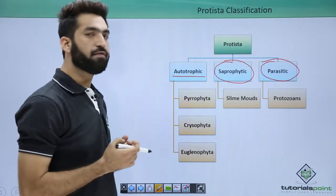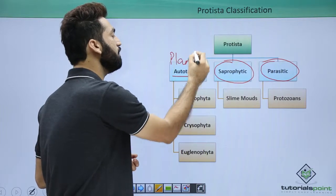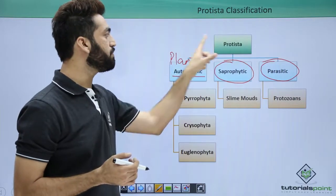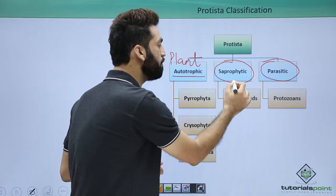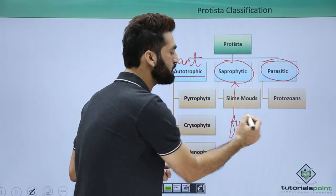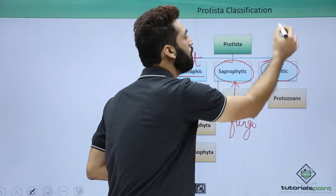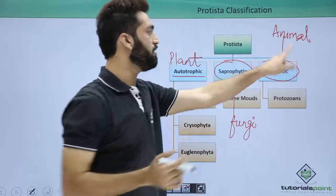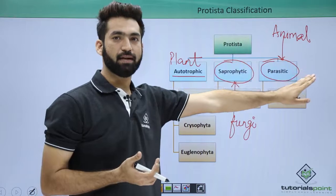The autotrophic group is called plant Protista because they behave like plants. The saprophytic group belongs to fungus-like organisms and is called fungal Protista. The parasitic group behaves like animals and is called animal Protista. So Protista members can behave like plants, like fungi, or like animals.